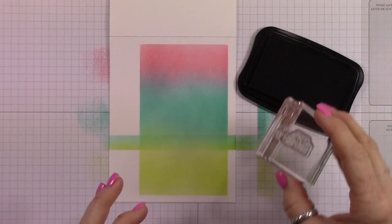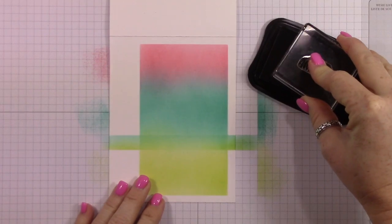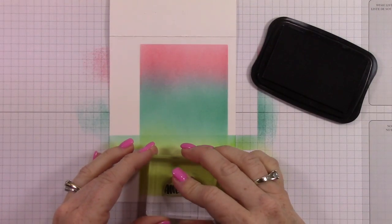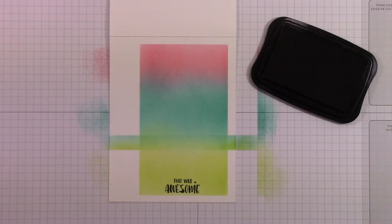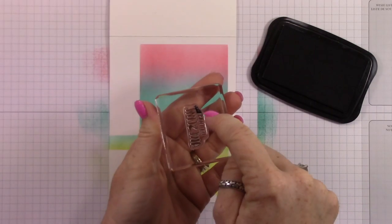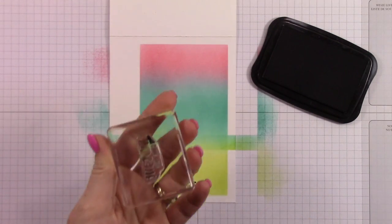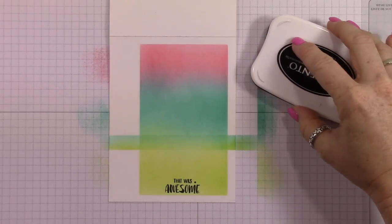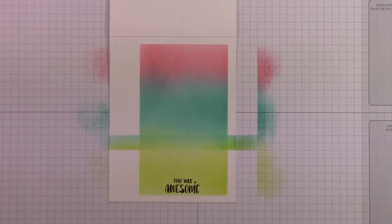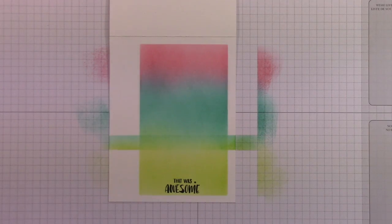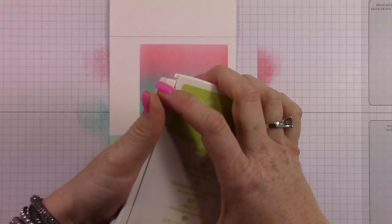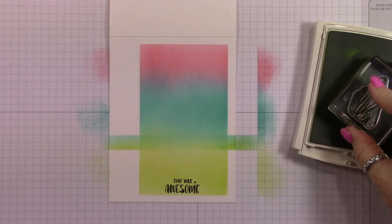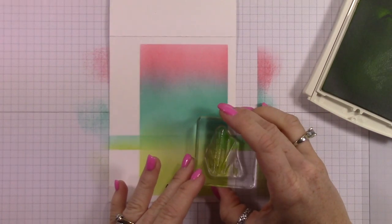I'm using Memento Tuxedo black ink to stamp my sentiment down at the bottom. I messed up because I pushed too hard and you see that little black dot. That's where I messed up because I had too much ink there. It's not ruining my card, and I always say we're handmade not Hallmark. I think I actually stole that saying from Jennifer McGuire, but it's the truth, so I'm not real worried about it.